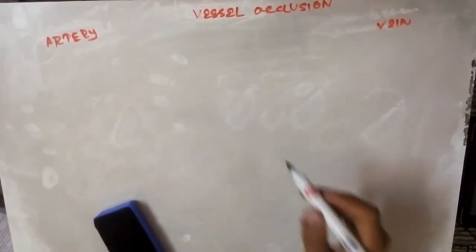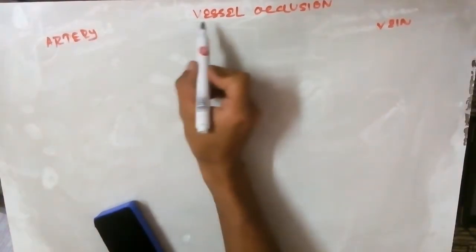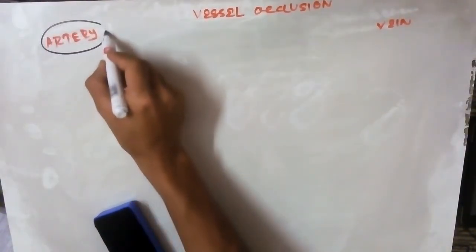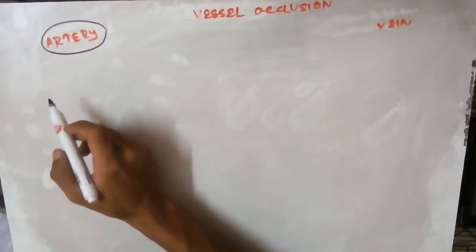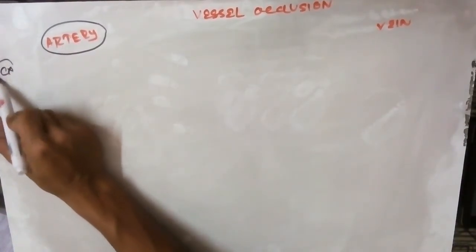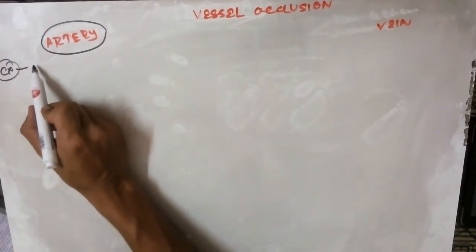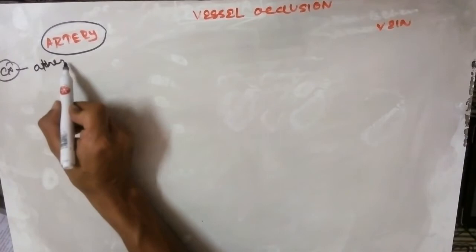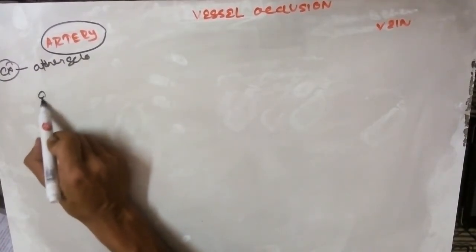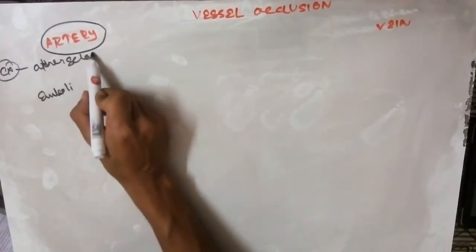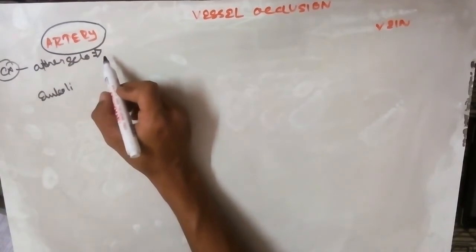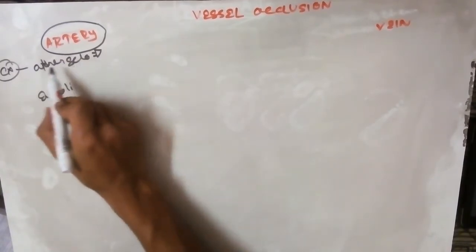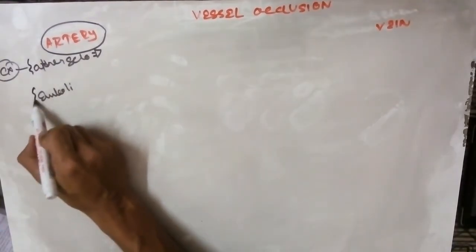We will discuss vascular disorders in the retina, starting with vessel occlusion. First, we will study arterial occlusion. The artery can be either central retinal artery or branched retinal artery. There are two major causes of artery occlusion: atherosclerosis and emboli formation. Atherosclerosis is caused by sedentary lifestyle, diabetes mellitus, hypertension, hyperlipidemia, oral contraceptives, homocystinuria, and tobacco use.